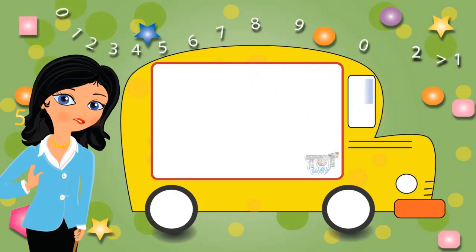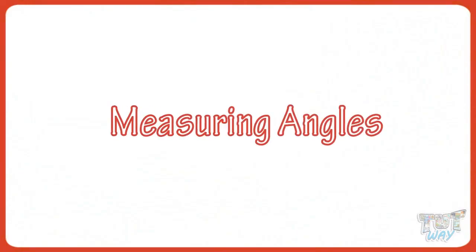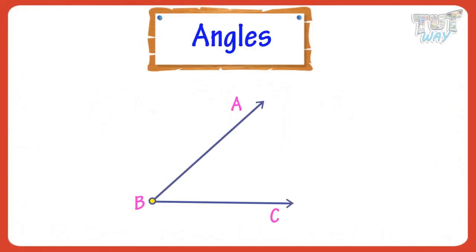Hi kids! Today we will learn how we can measure angles. So let's get started! An angle is a shape formed by two straight lines diverging from a common point.